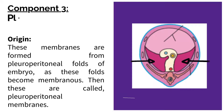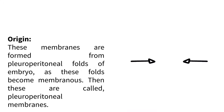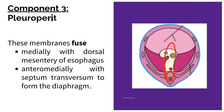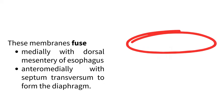Component 3: Pleuroperitoneal membranes. These membranes are formed from pleuroperitoneal folds of the embryo as these folds become membranous, and are then called pleuroperitoneal membranes. These membranes fuse medially with the dorsal mesenteria esophagus, and anteromedially with the septum transversum to form the diaphragm.